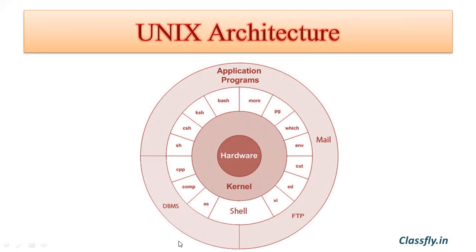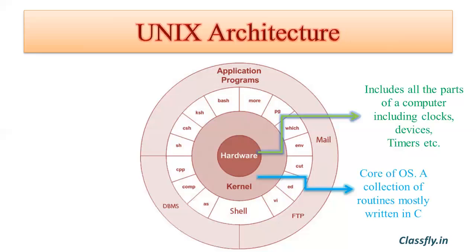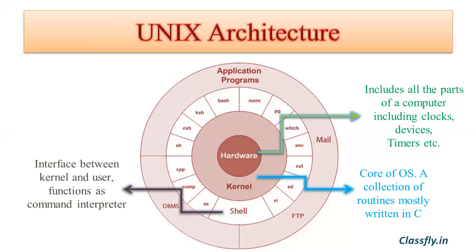Let us know the description of each part. Firstly, hardware includes all the parts of a computer including clocks, devices, timers, etc. Next, the kernel — the kernel is the core of the operating system, a collection of routines mostly written in C. It is loaded into memory when the system is booted and communicates directly with the hardware. The kernel manages system memory and processes, and decides priorities.